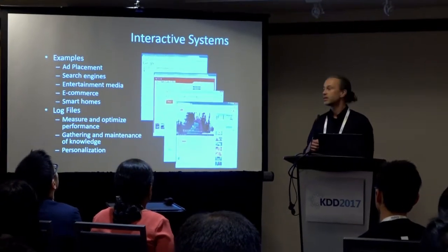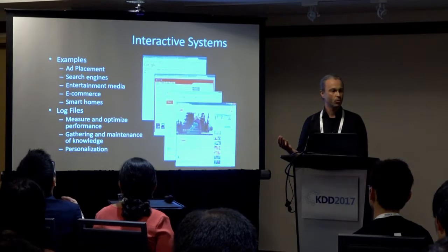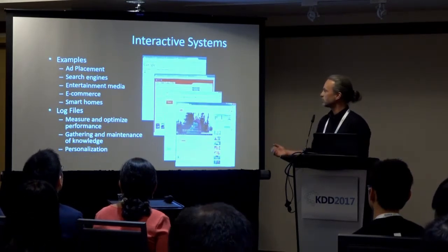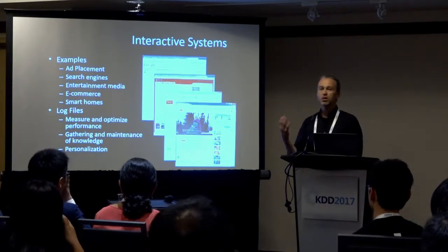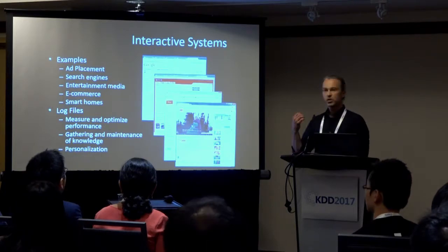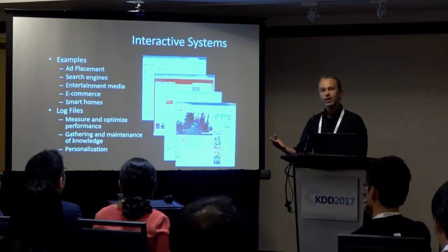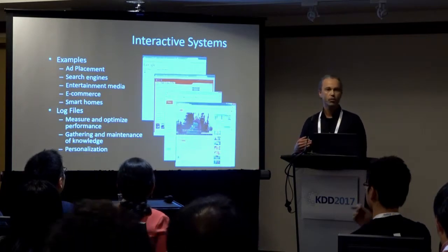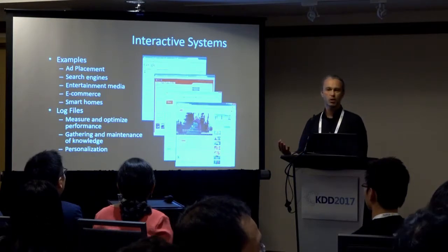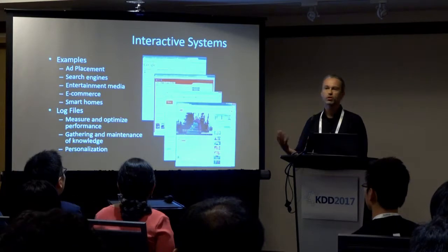At that level, we have systems that are actually interacting with the world. Systems like a search engine, a recommender system, an ad placement system, or e-commerce system are constantly making interventions. They are presenting a ranking, placing an ad, recommending a movie, and then observing what the user does in response. In a sense, they are constantly running these micro-experiments and observing the outcomes of these micro-interventions.